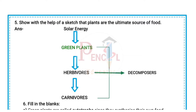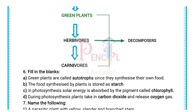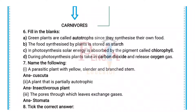Fifth question: Show with the help of a sketch that plants are the ultimate source of food. Answer: The sketch has been given. Sixth question: Fill in the blanks. (a) Green plants are called autotrophs since they synthesize their own food.